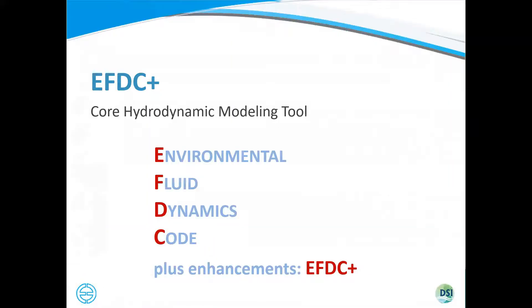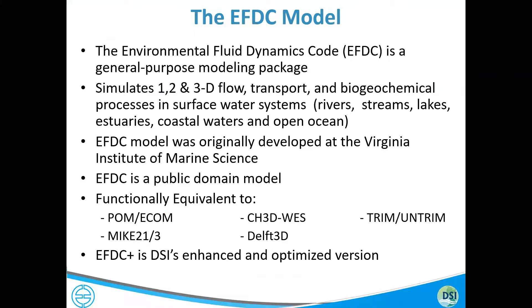The next component of EEMS is the core hydrodynamic modeling tool, the Environmental Fluid Dynamics Code, which we have renamed EFDC Plus since we've generated so many enhancements and revisions to the model over the years. It is substantially improved over the base model of EFDC, compared to the EPA or GBC version. Originally, this code was developed at the Virginia Institute of Marine Science with funding from EPA and the state of Virginia for the Chesapeake Bay work back in the 1980s and early 1990s.